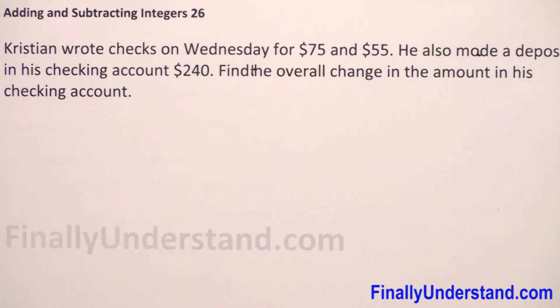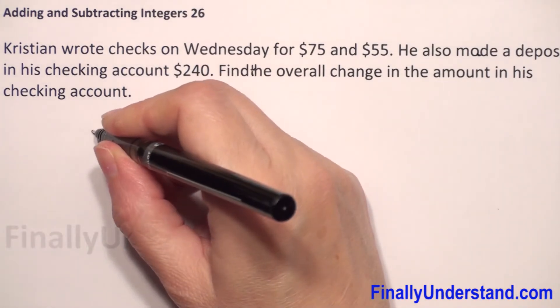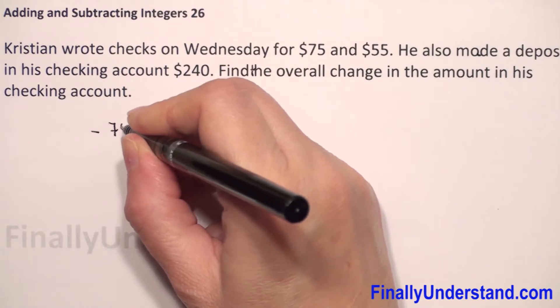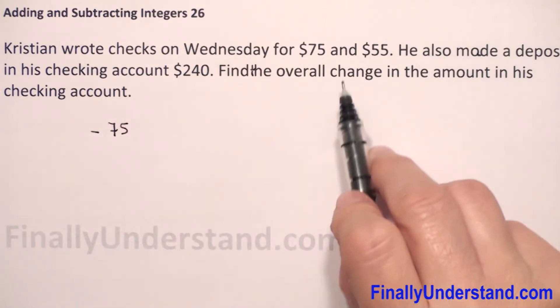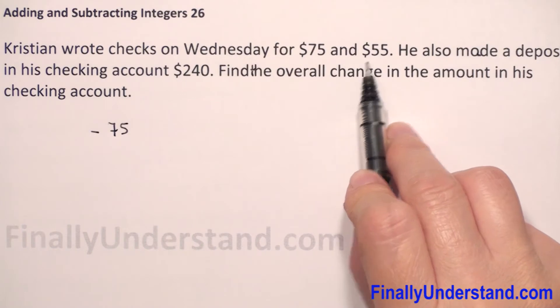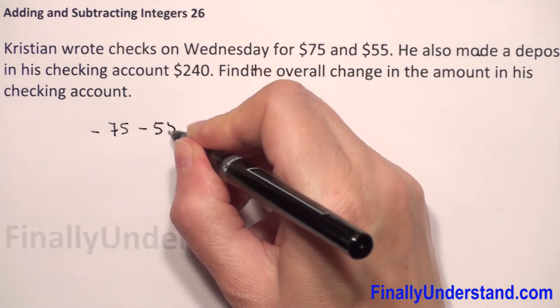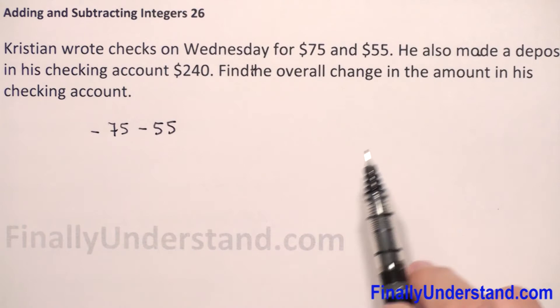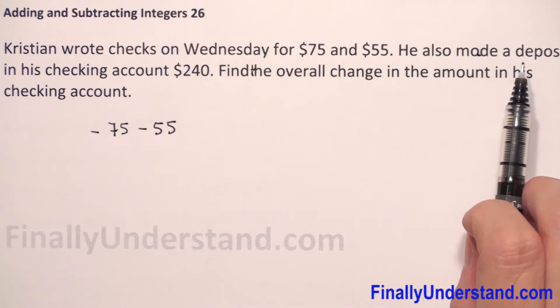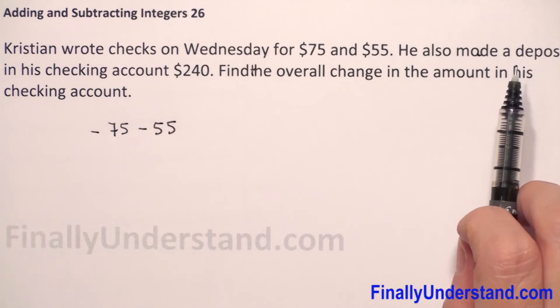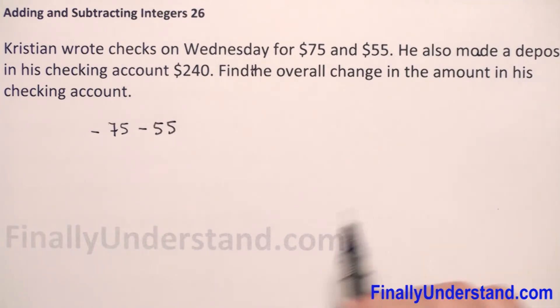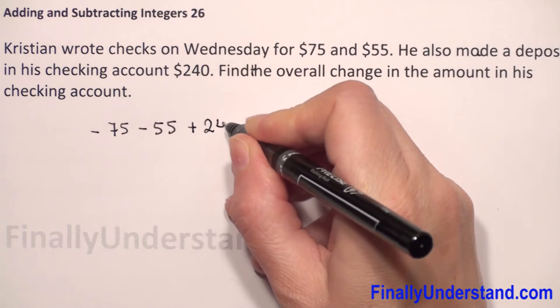First we have that he wrote checks, so it means that he deducted from his account, first $75. We will write negative sign before $75. Next, he also wrote a check for $55, so minus $55. And next, he made a deposit. He adds money to his account, so it will be plus $240.